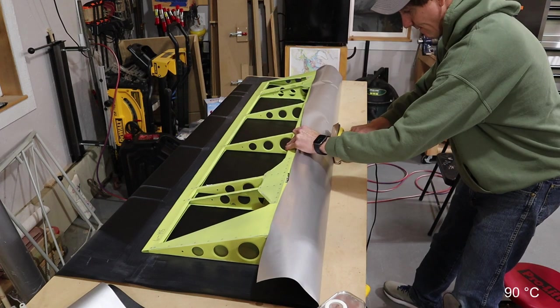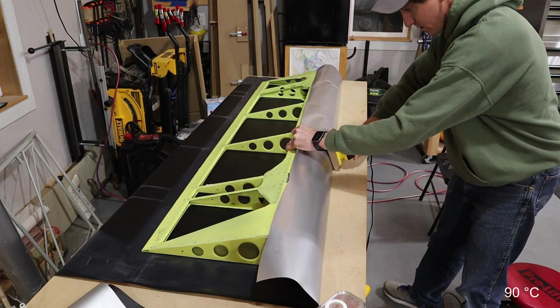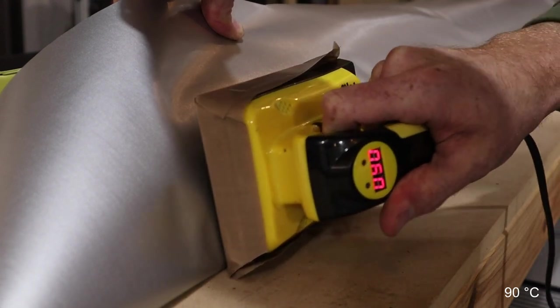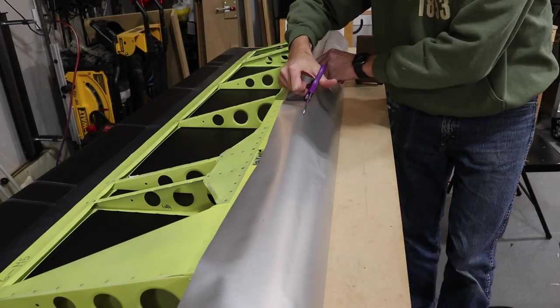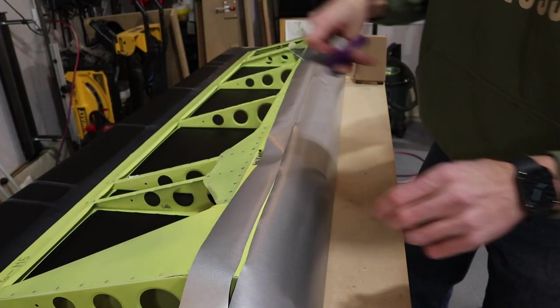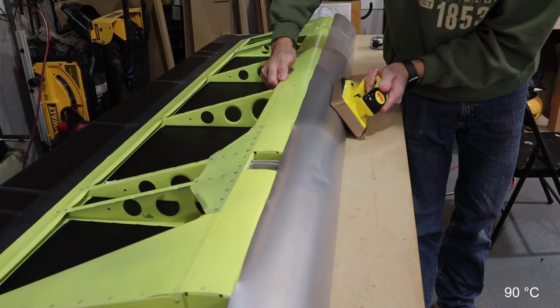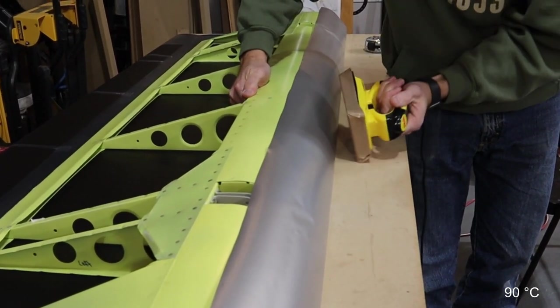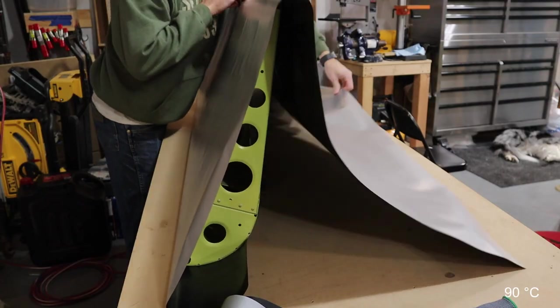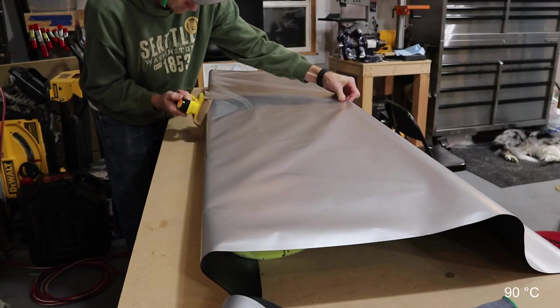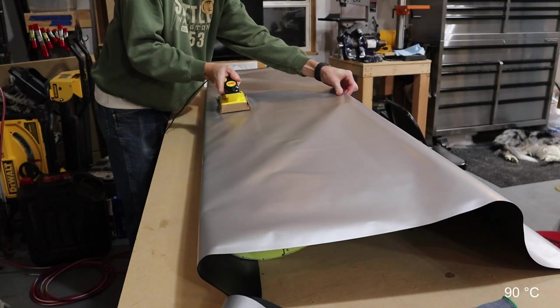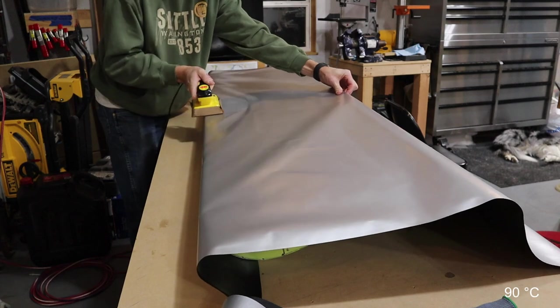On these large aluminum pieces it was easy to get air pockets, so I took my time starting in the middle whenever practical and completely tacked everything down at 90 degrees Celsius before going back and setting the glue with 120 degrees Celsius.